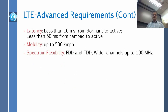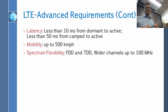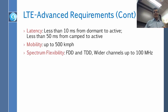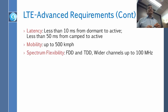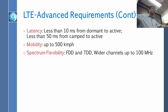Continuing on: latency is less than 10 milliseconds from dormant to active — so if you are not doing anything and you need to make a call, it takes 10 milliseconds. And 50 milliseconds from camped to active, meaning camped is a deeper sleep state than dormant. Mobility is supported up to 500 kilometers per hour. For spectrum flexibility, it supports both FDD (frequency division duplexing) and TDD (time division duplexing), with wider channels up to 100 MHz to meet the 1 Gbps challenge.